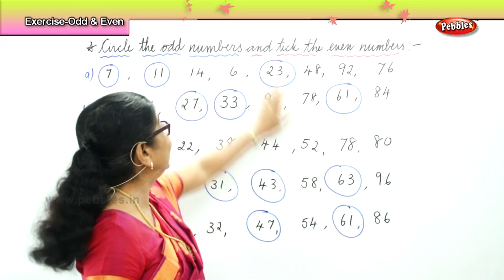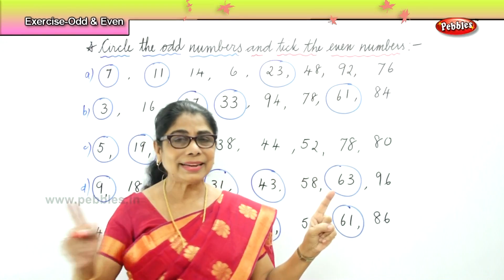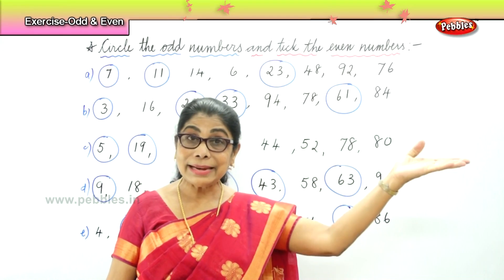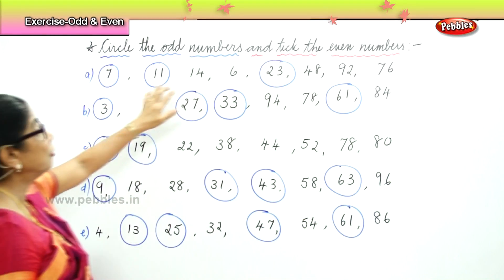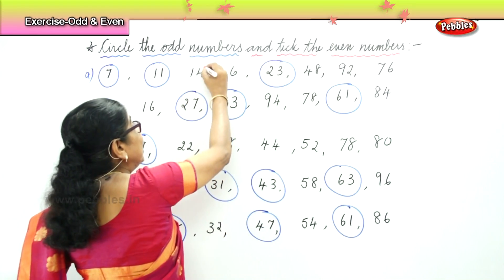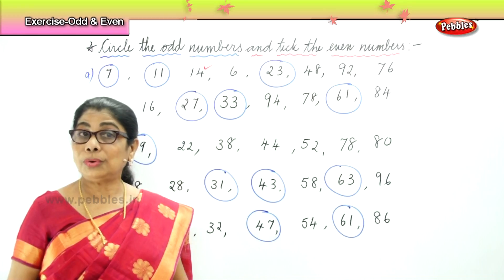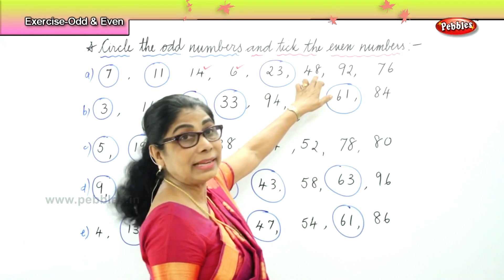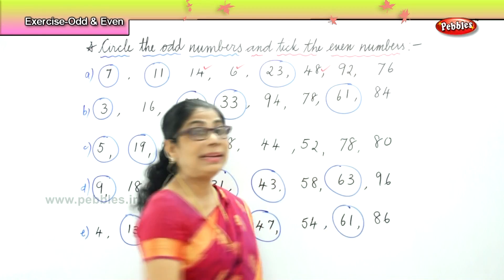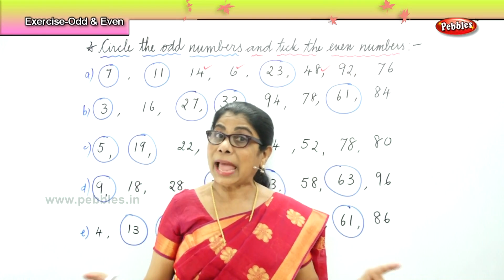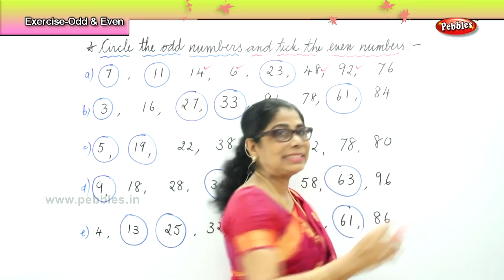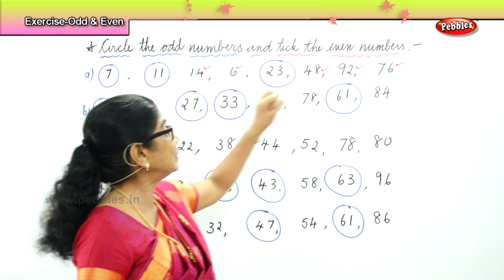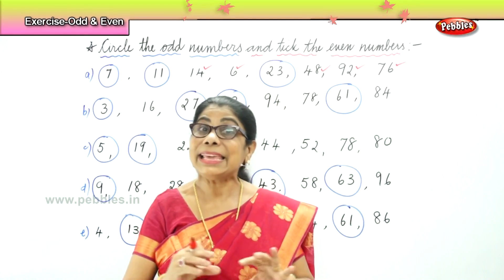Now let's take all the even numbers. What did we say about even numbers? They all have partners. Two, four, six, eight, ten — they can all be paired up. Fourteen ends in four — it's an even number, nobody left out. Six is an even number, it can be paired up. Forty-eight ends in eight — even number. Ninety-two ends in two — they can all have pairs. Seventy-six ends in six — they can all be paired up. So fourteen, six, forty-eight, ninety-two, seventy-six — they are all even numbers.